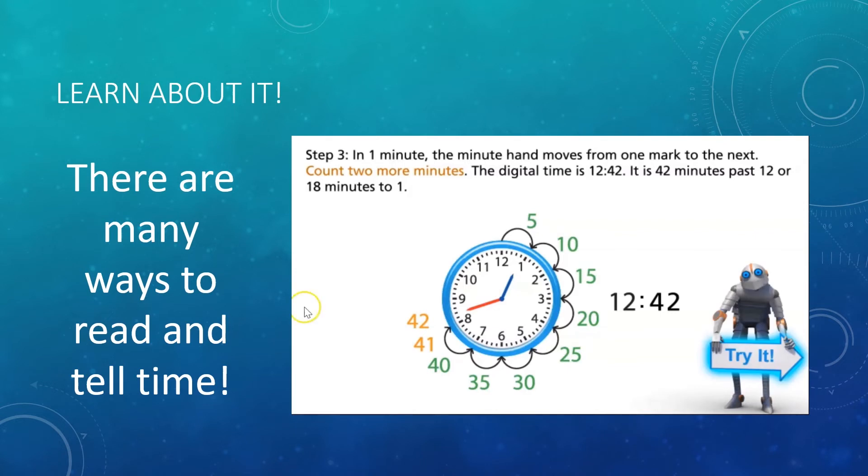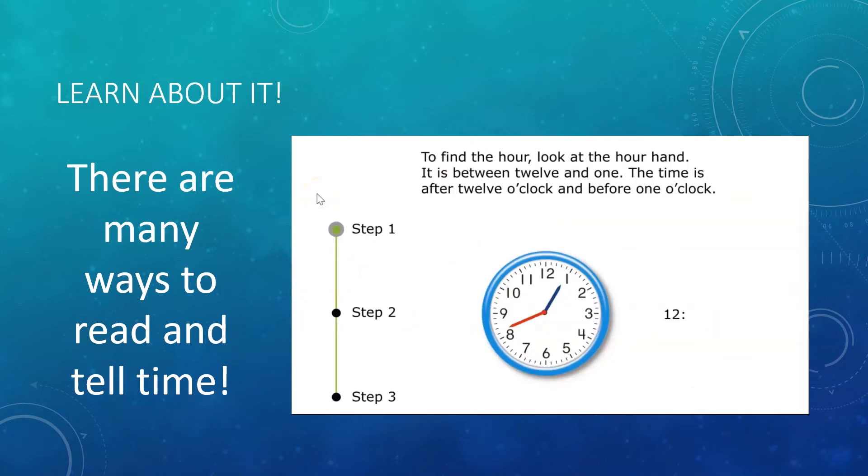Notice how they were able to tell the time two different ways: 12:42, 42 minutes past 12, or 18 minutes to 1. That means that 18 minutes will be at 1 o'clock. So we already established that the hour hand is between 12 and 1. The time is after 12 o'clock and before 1 o'clock.